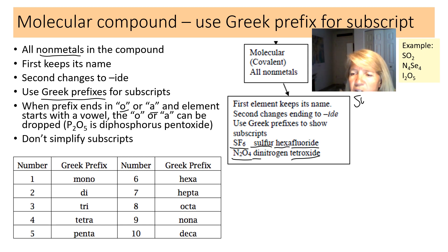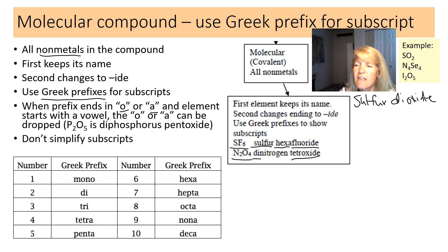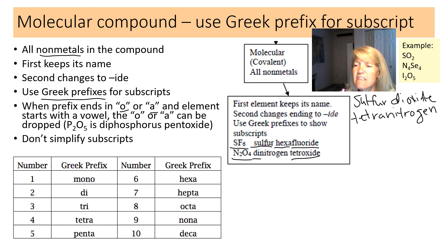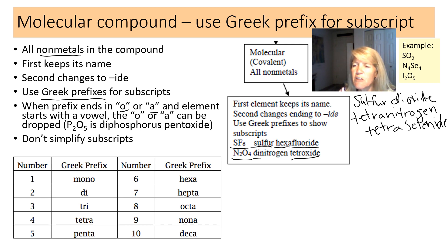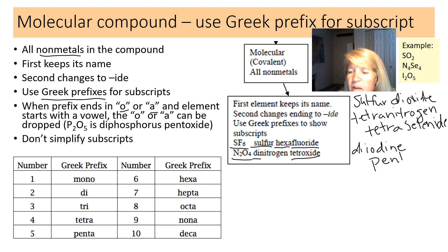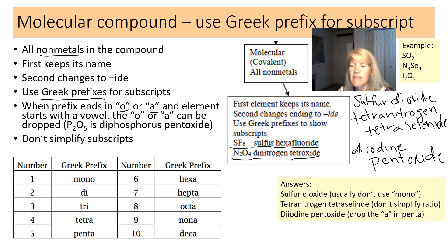More examples: N4Se4 — nitrogen has four, so it's tetranitrogen; selenium changes to selenide with four, so tetraselenide. For I2O5 — iodine has two so it's diiodine; five is penta, and we drop the 'a' before oxide, giving pentoxide.